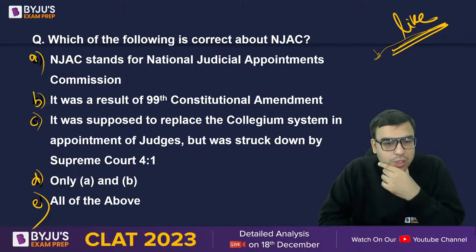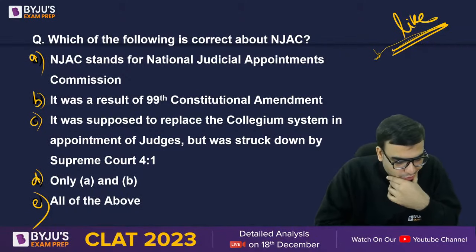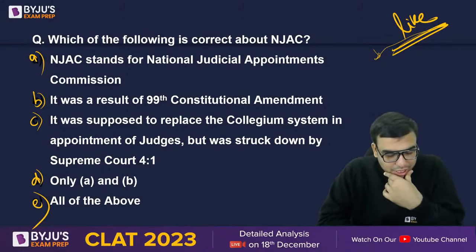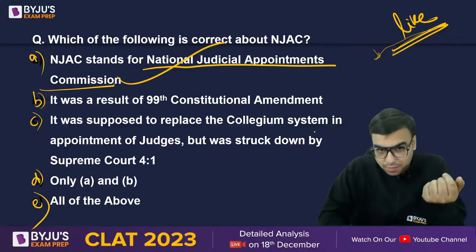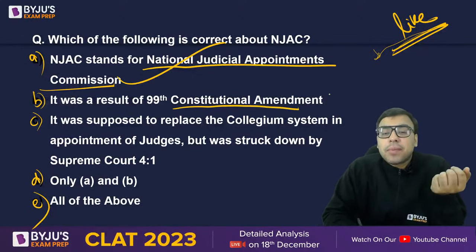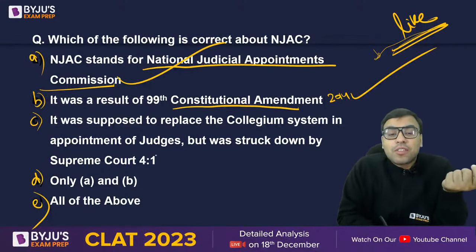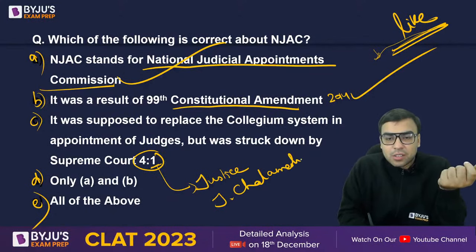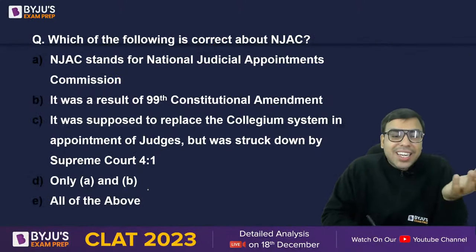People are saying D; some are saying the ratio was 3 to 1, not 4 to 1. NJAC stands for National Judicial Appointment Commission — correct. It was a result of the 99th Constitutional Amendment, 2014 — correct. It was supposed to replace the collegium system in the appointment of judges but was struck down by the Supreme Court 4 to 1 — correct. The only dissenting judge was Justice Chelameswar. So A, B, C are all correct, and the right answer is option E.